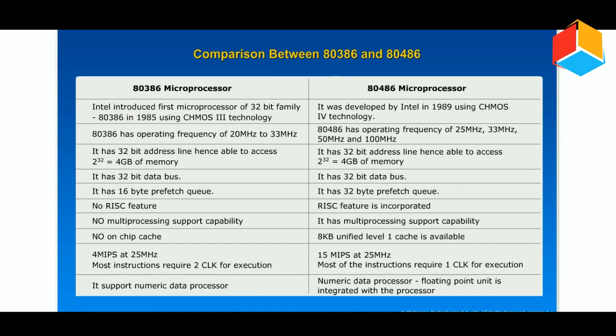The 80386 has no multiprocessing support capability. The 80486 has multiprocessing support capability.